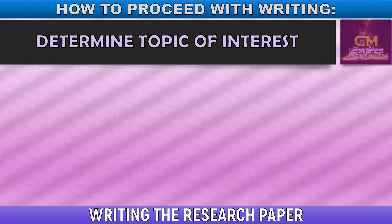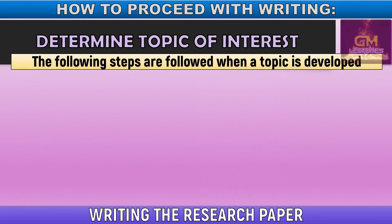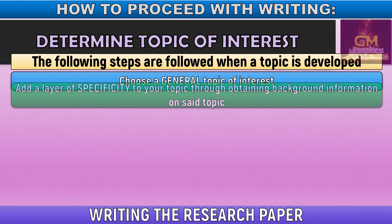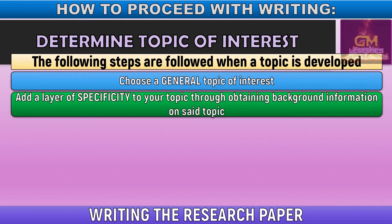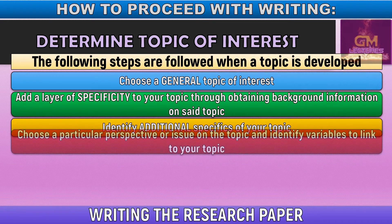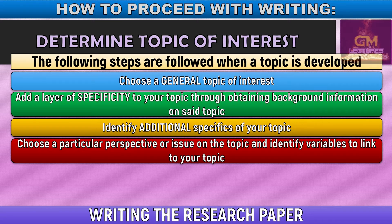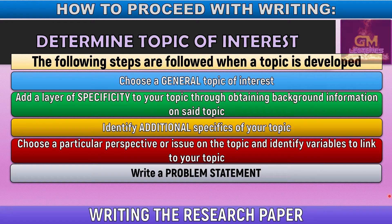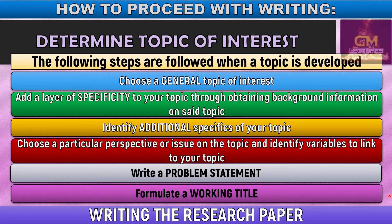Furthermore, in terms of determining the topic of interest, the following steps are followed when a topic is developed. We identify a general topic of interest, followed by adding a layer of specificity through obtaining background information. Next, we identify additional specifics of your topic, then choose a particular perspective or issue and identify variables to link to your topic. Then you write a problem statement, from which you formulate a working title — something tentative, not permanent, and bound to change depending on recommendations.